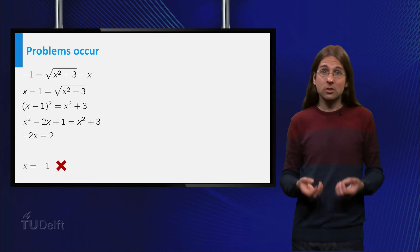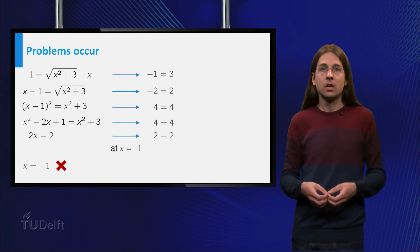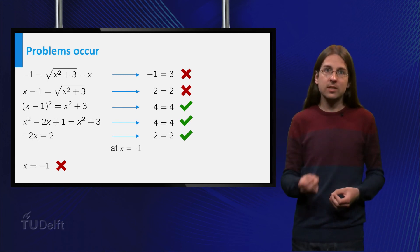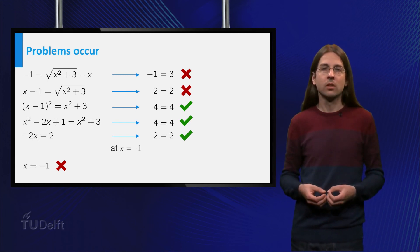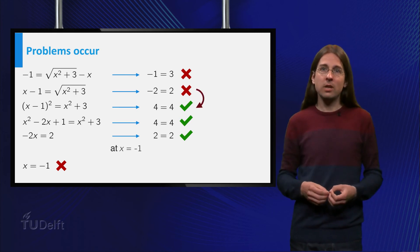We have introduced a solution to our equation at some point in our calculation. If we plug x equals minus 1 into all our steps, we can see where the problem occurred. We see that it occurred when we squared both sides of the equation.